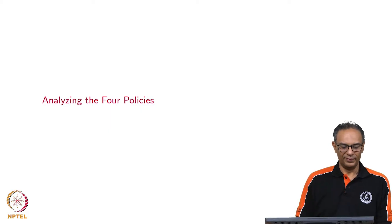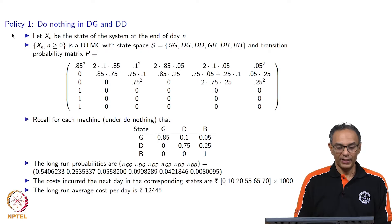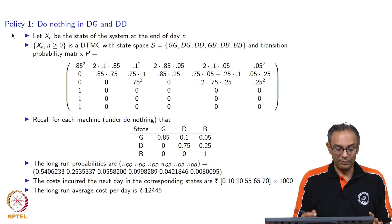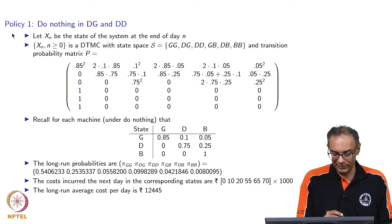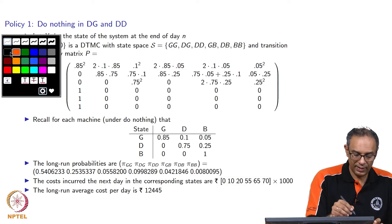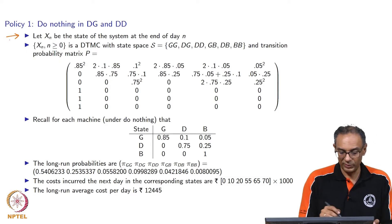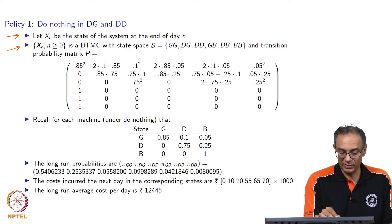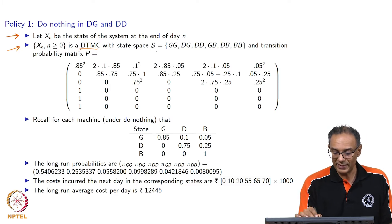Let us analyze the four policies. The first policy is to do nothing in the DG and DD stage. Recall that DG means one machine is deteriorated while the second machine is good, and DD means both machines are deteriorated. X_n is going to be the state of the system at the end of the nth day, modeled as a discrete time Markov chain with state space S.